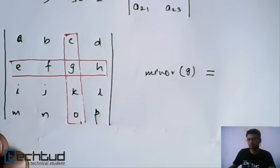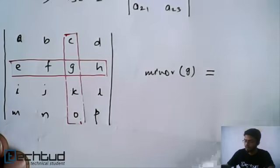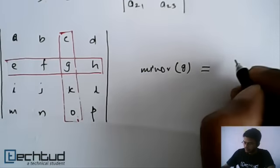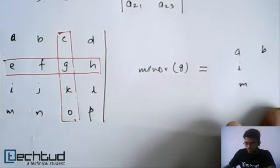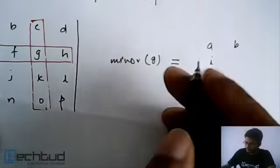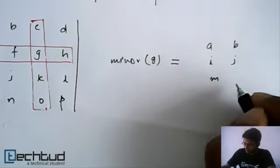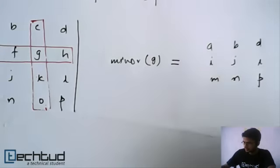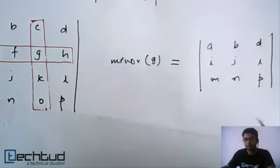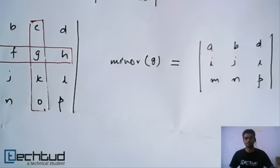The remaining 3 cross 3 determinant will be our minor. So a, b, d, i, j, l, m, n, p. So this is the minor of g.